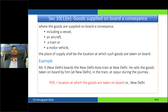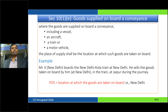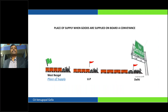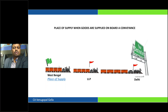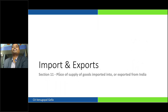The last domestic transaction rule: where goods are supplied on board a conveyance — vessel, aircraft, train, or motor vehicle — the place of supply will be wherever such goods are taken on board. So if a train moves from West Bengal to Delhi and goods like books or gadgets are sold in UP or Delhi in the conveyance, the place of supply will be wherever they are loaded — which is West Bengal.